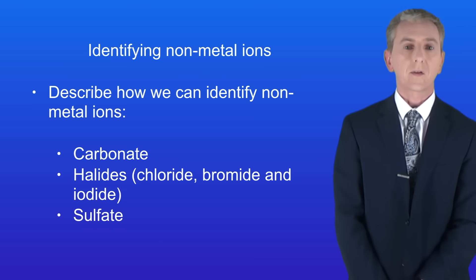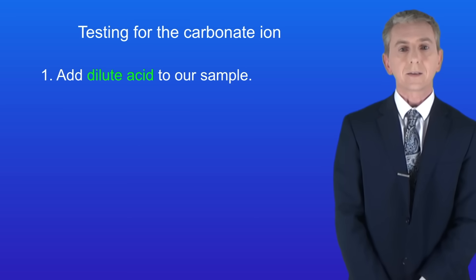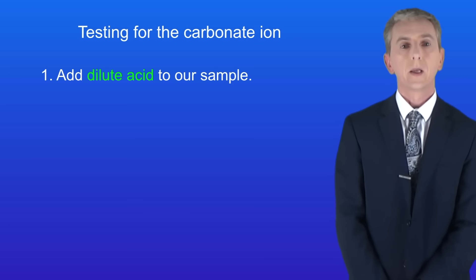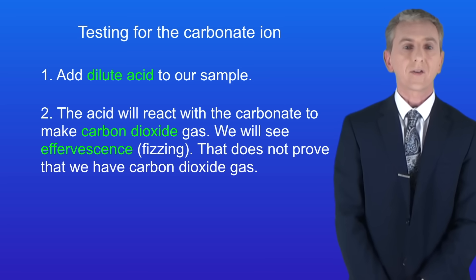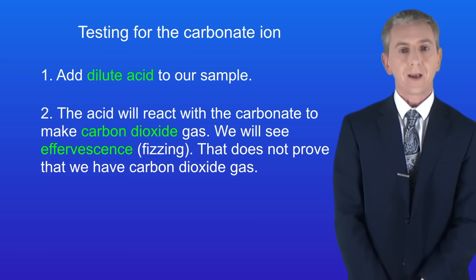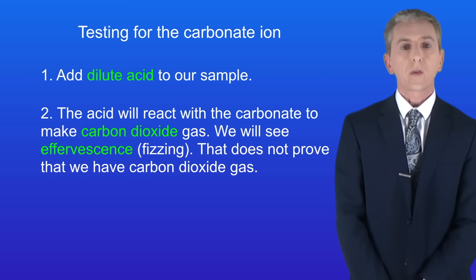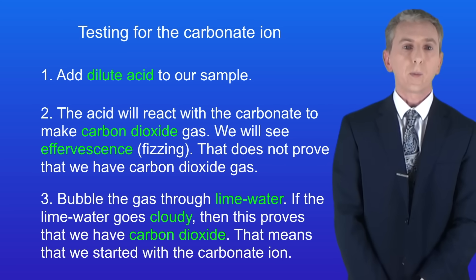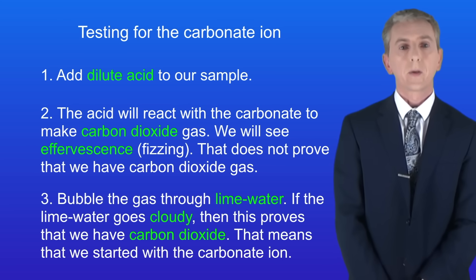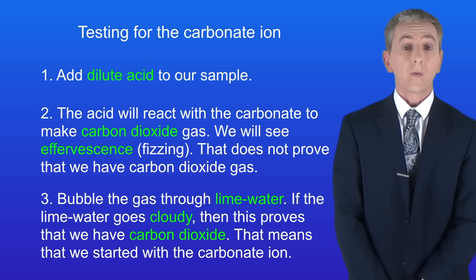Let's start by looking at how we test for the carbonate ion. You need to learn these stages. We start by adding dilute acid to our sample — any acid will work. If carbonate is present then the acid will react with the carbonate to make carbon dioxide gas. We will see effervescence, in other words fizzing, but that does not prove that we've got carbon dioxide gas. So now we bubble the gas through lime water. If the lime water goes cloudy then this proves that we've got carbon dioxide, and that means that we started with the carbonate ion.